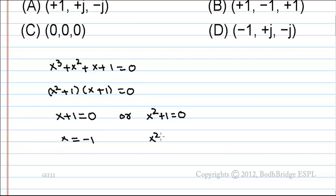And from x²+1=0, x equals +j or -j. So the answer is -1, +j, -j, which is option D.